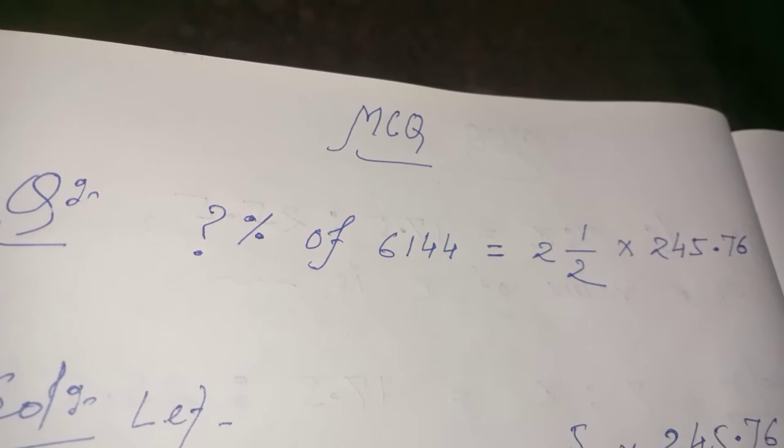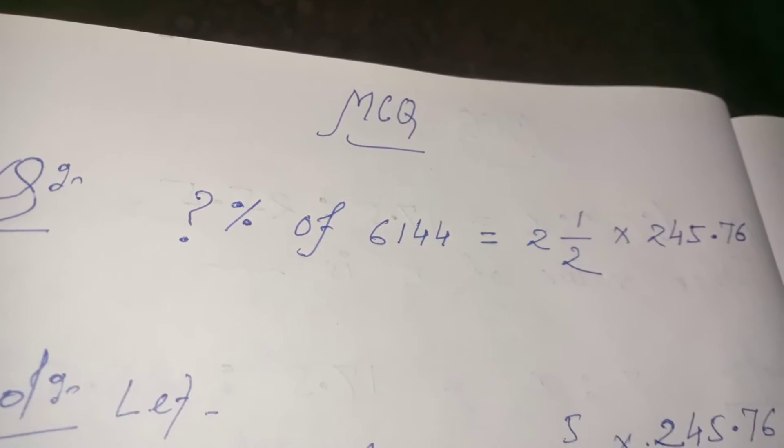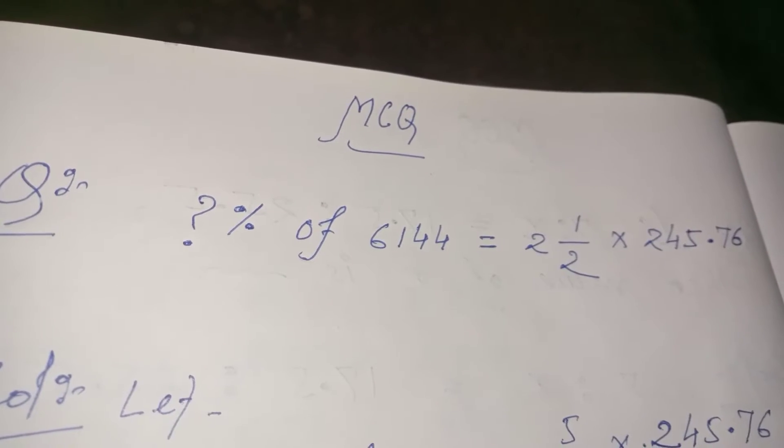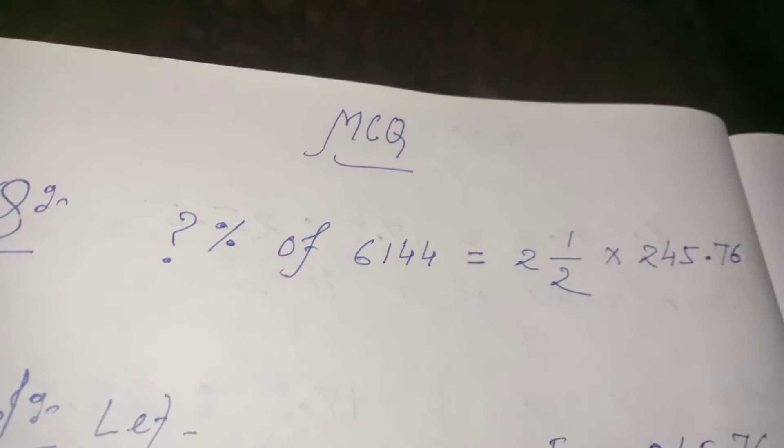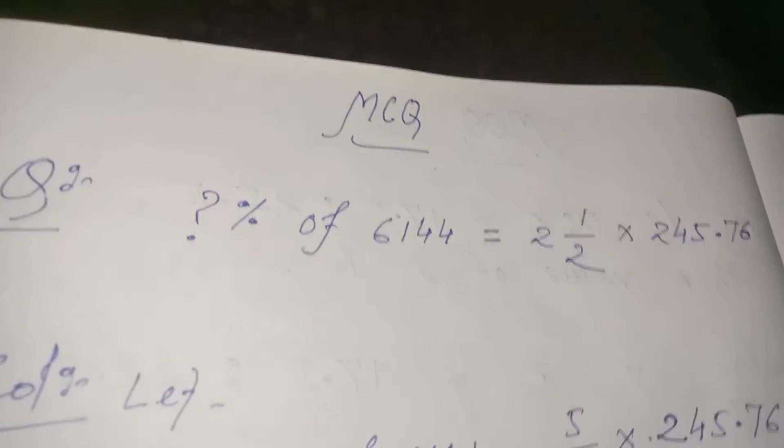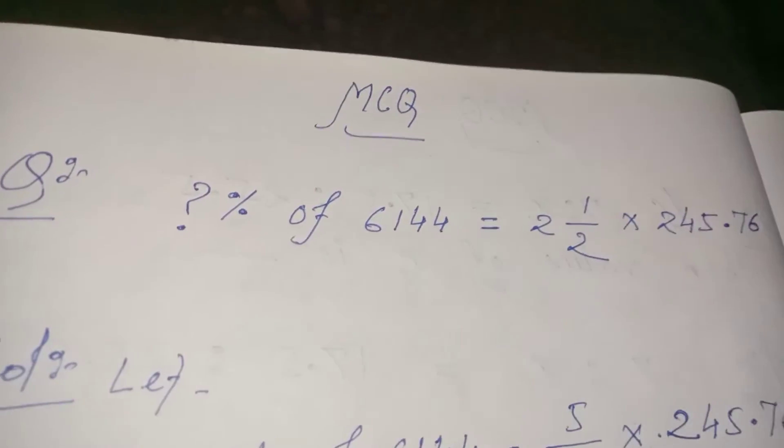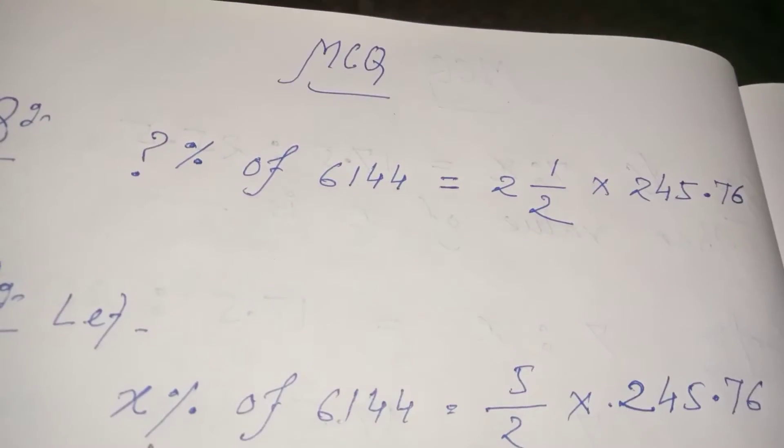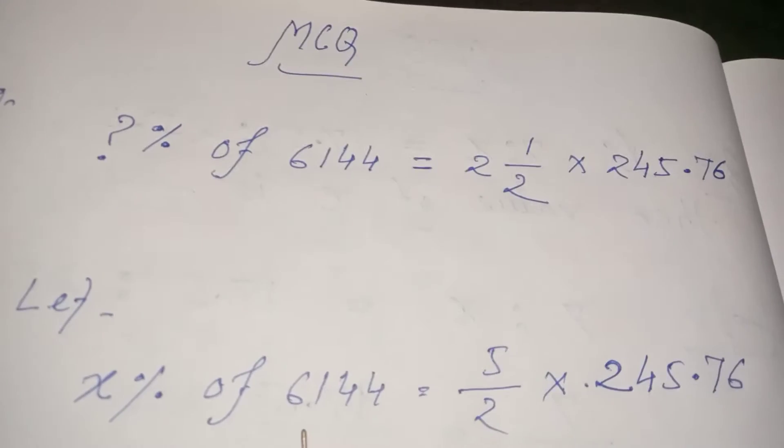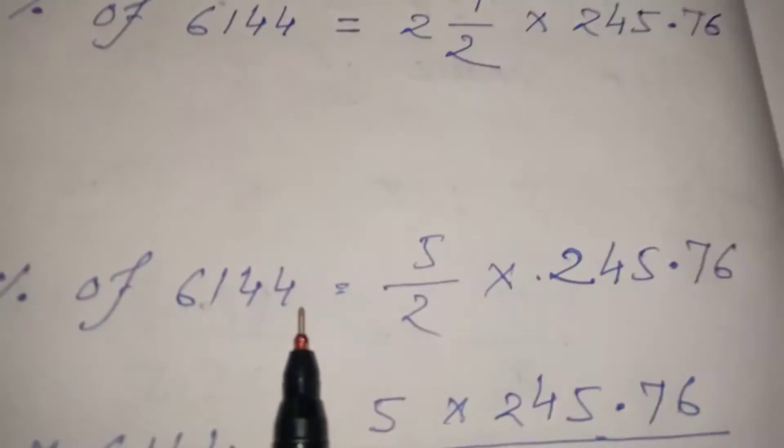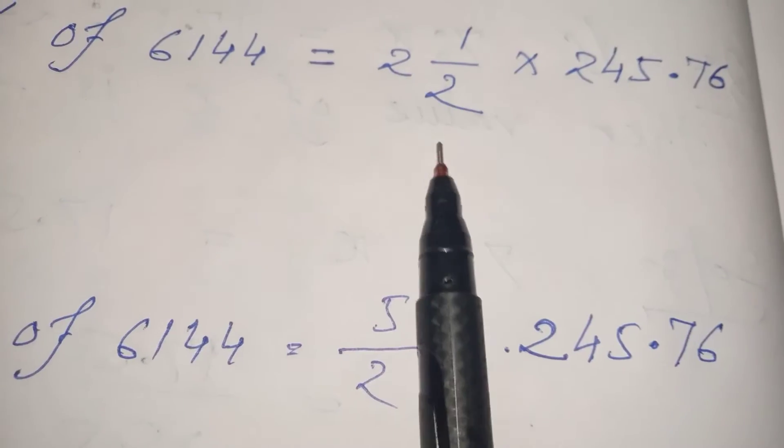Let me show you how to solve this. I'll take this number and set up the equation: x percent of 6144 is equal to 2½ × 245.76.